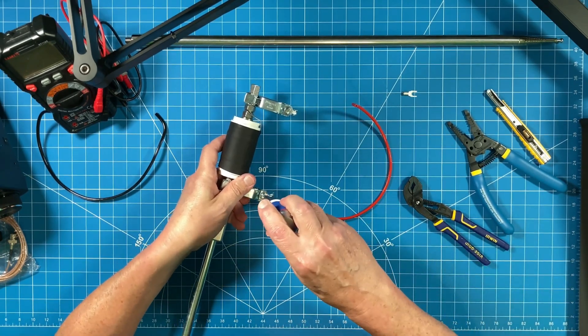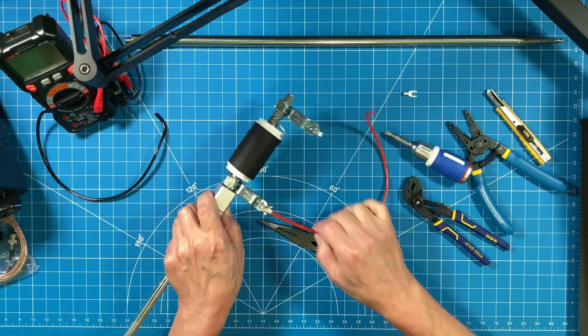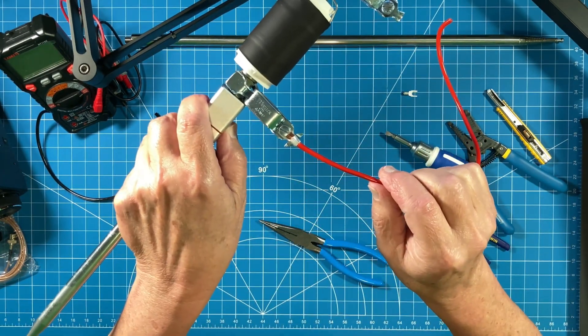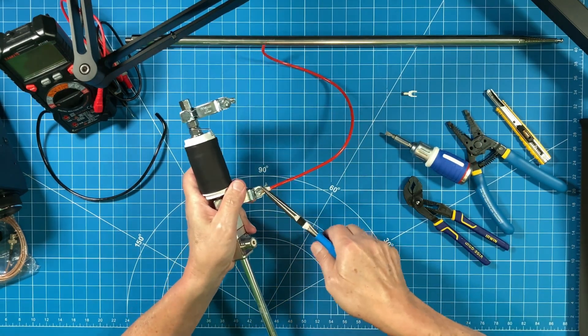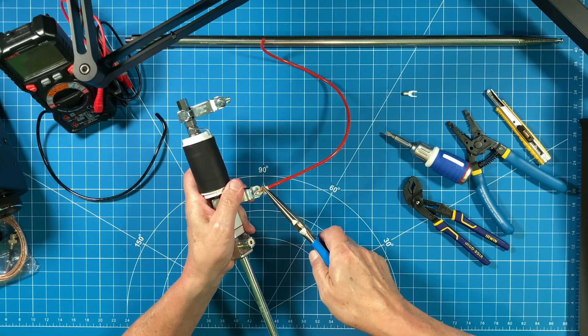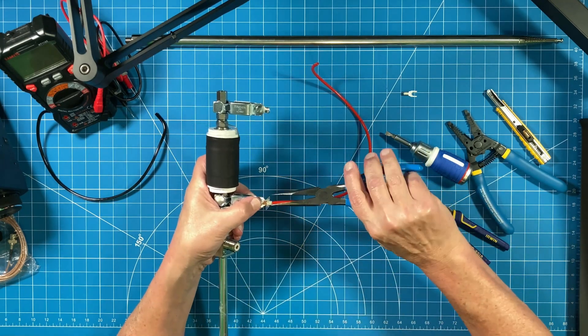Now that I screw the terminal onto that Mueller alligator clip, it's looking pretty good. I'm going to go ahead and take those ears that I flattened out and bend them back over top of that connector as well as over top of the wire.